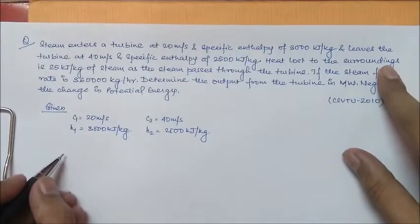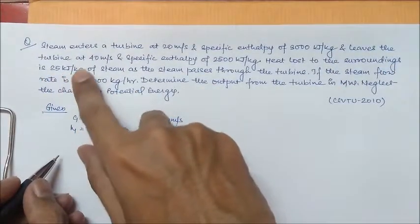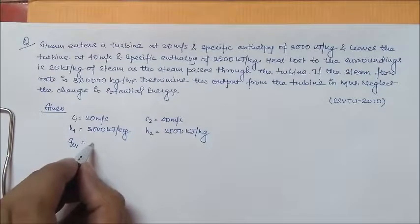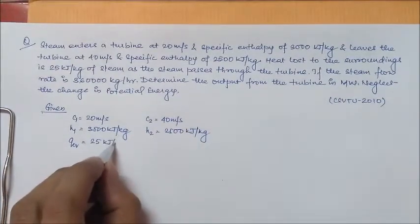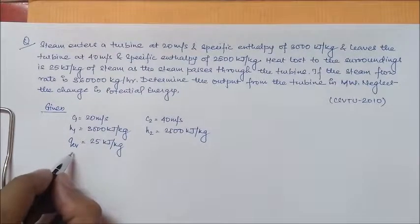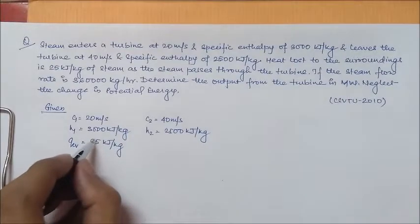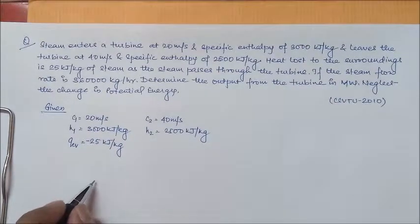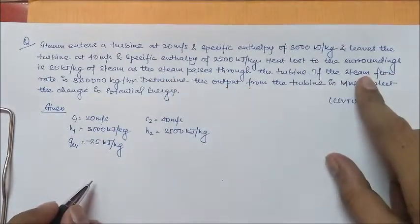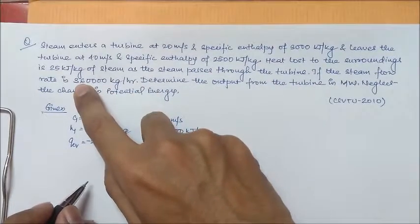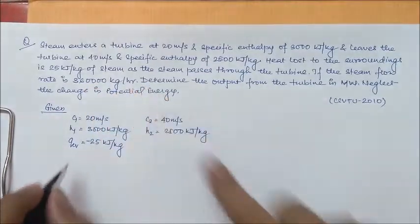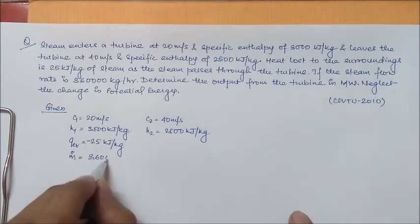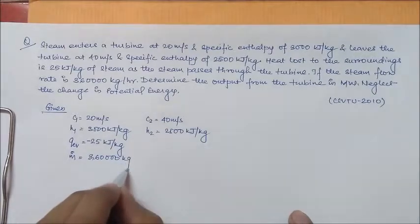Also, it says the heat loss to the surrounding is 25 kilojoule per kg. Again, it's in specific terms so we use a small letter. It's 25 kilojoule per kg, and since it is lost to the surrounding, it will be negative. The steam flow rate is 3,60,000 kg per hour.